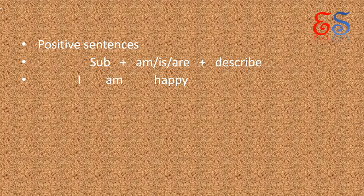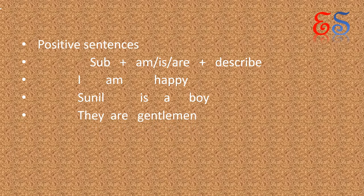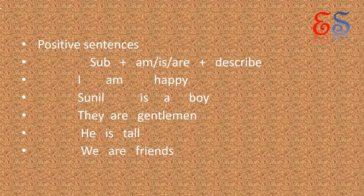I am happy. I is the subject, am is used with I — और उसका वर्णन किया गया है कि मैं खुश हूँ। Sunil is a boy — Sunil एक लड़का है। They are gentlemen — वे सभ्यपुरुष हैं। He is tall — वह ऊंचा है। We are friends — हम दोस्त हैं। Birds are lightweight — पक्षी हल्के वजन के होते हैं।